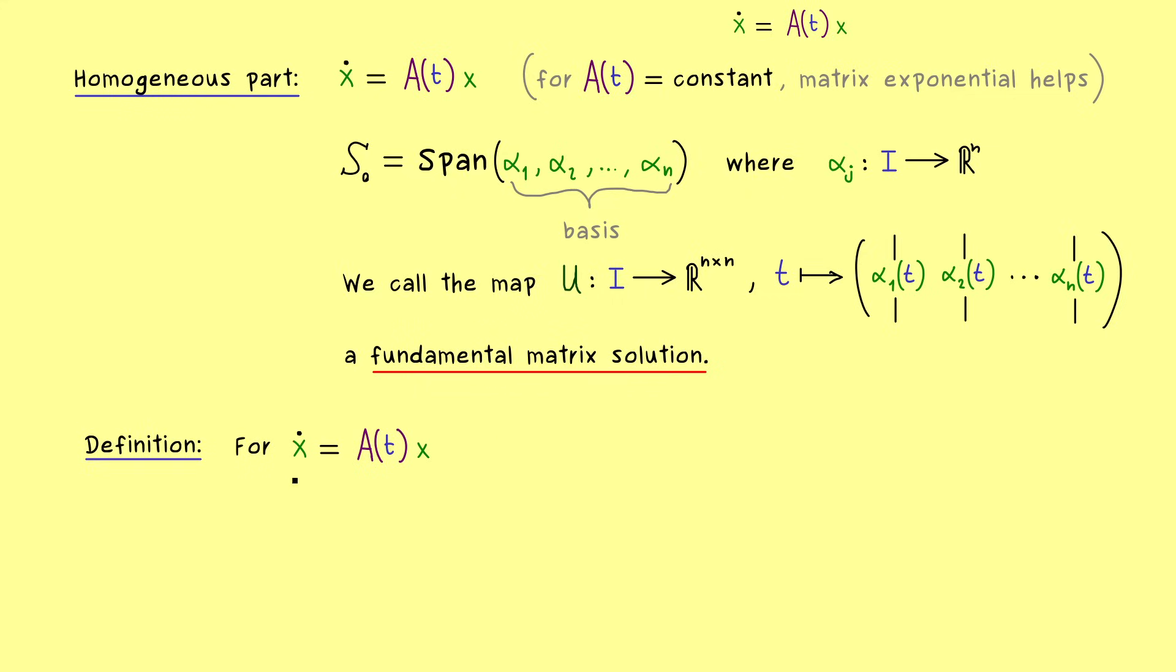...which means we have this linear system, where A(t) is a continuous matrix function. Hence, we know as before that we definitely find n linearly independent solutions for this system.